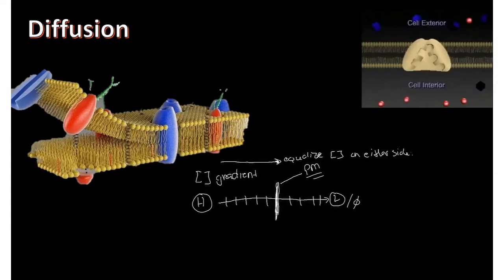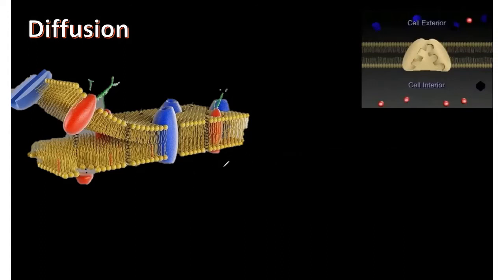Any molecule that is soluble and can easily pass across a membrane will diffuse. The movement of particles is random and free — they don't have a directional arrow; they just randomly move across the membrane to balance things out on either side. When we talk about the random free movement of particles, what we're referring to is flux.